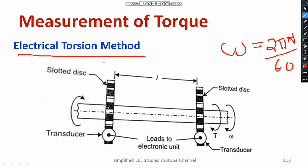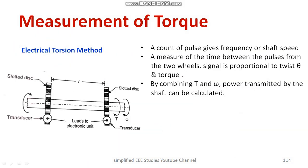The distance between two discs is the gap L. With the help of the slotted disc, you count the pulses with respect to rotation, and this count is fed directly to an electronic device. The count of pulses gives a frequency or shaft speed. The time between pulses from two wheels is proportional to the twist theta and torque.